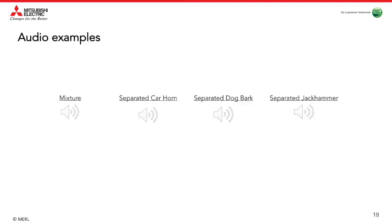Now let's listen to the output of our separation system trained using frame-level labels for an example mixture from the testing dataset. We hear the mixture, then the separated car horn, separated dog bark, and separated jackhammer. Although the estimated jackhammer doesn't sound as clean as the other two sources, the signal still seems to be isolated to some extent.